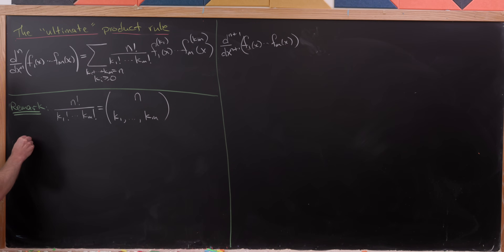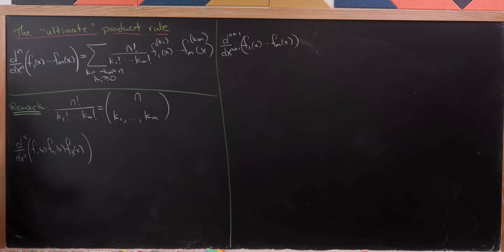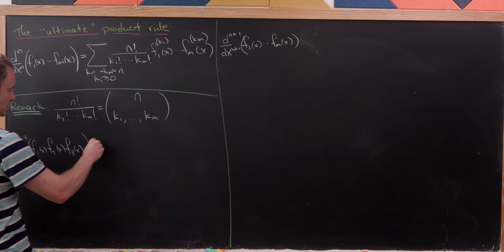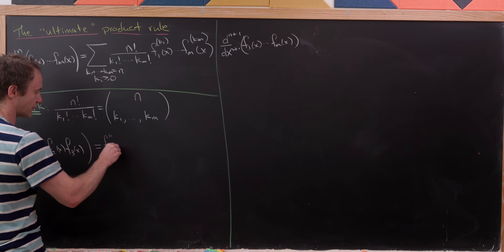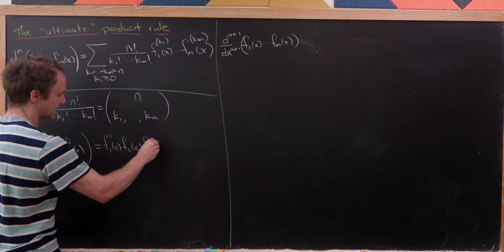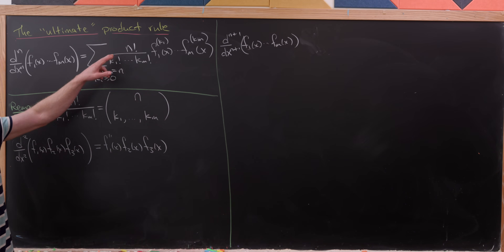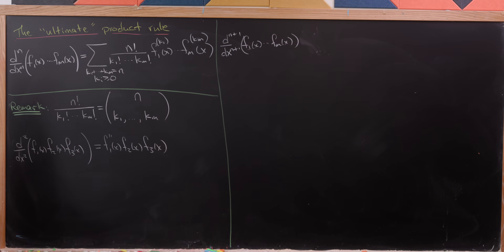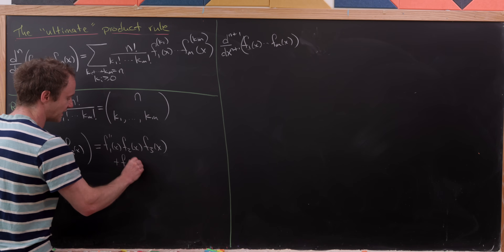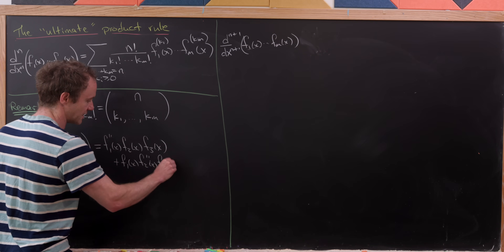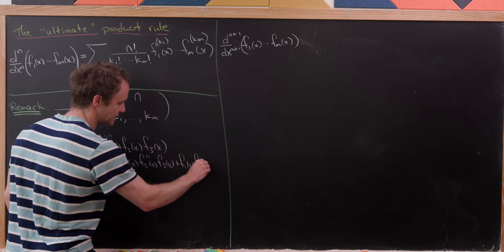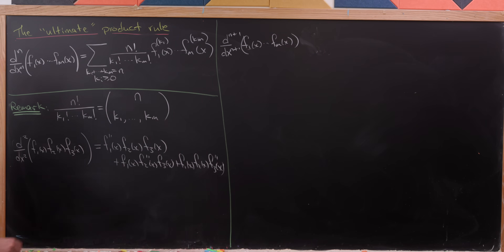We could do a little example pretty easily — the second derivative of the product of three functions: f1(x), f2(x), and f3(x). We'll have the second derivative of f1 times f2 times f3, which corresponds to k1 equals 2, k2 and k3 equal 0. The coefficient is 1, because we get 2 factorial over 2 factorial times 0 factorial times 0 factorial. Those are all the terms with pure second derivatives.